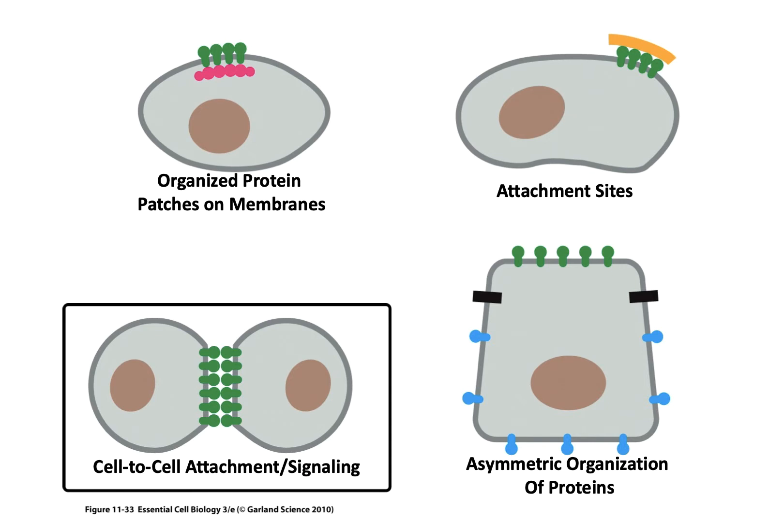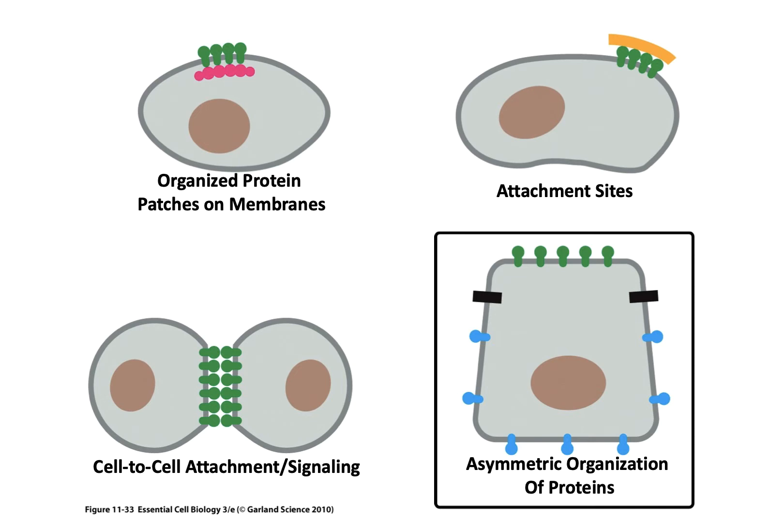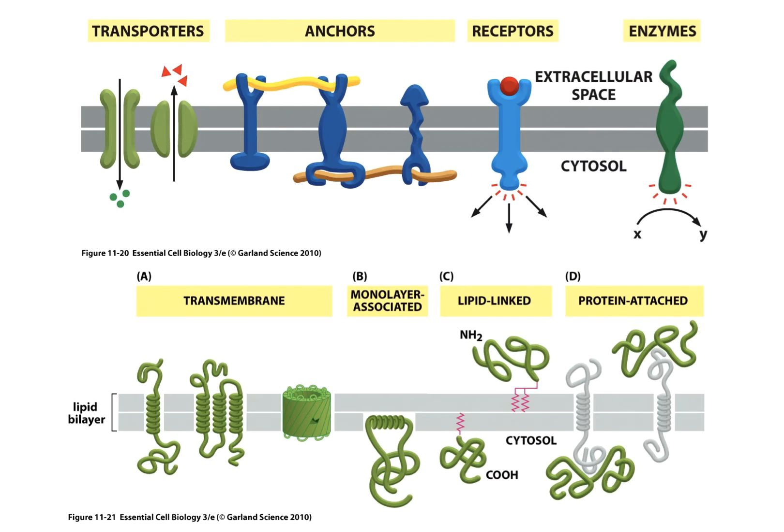Cells often communicate through their membranes using proteins. There are also asymmetric arrangements of proteins and other molecules embedded in the membrane for special purposes — such as having different functions on both sides of the cell, including epithelial cells that have certain types of proteins on one side and other types on the other pole of that cell. There is a large diversity of proteins that span the membranes or are embedded in them one way or another.